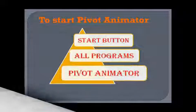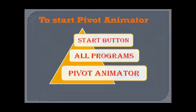Now we will move to our first topic: how to start Pivot Animator. First of all, click on the Start button. The Start menu appears. On the Start menu, select the All Programs option. Now scroll down and click the Pivot Animator folder. The Pivot Animator folder expands. Now click on the Pivot Animator option.